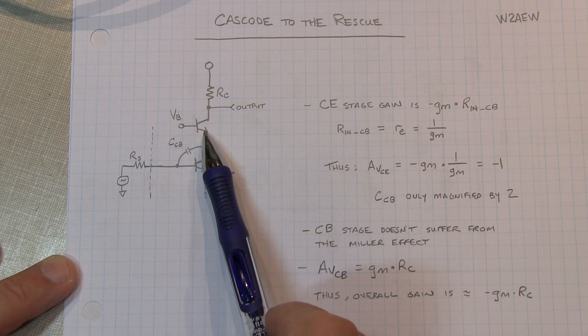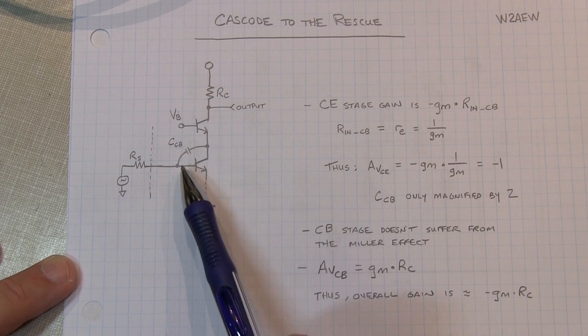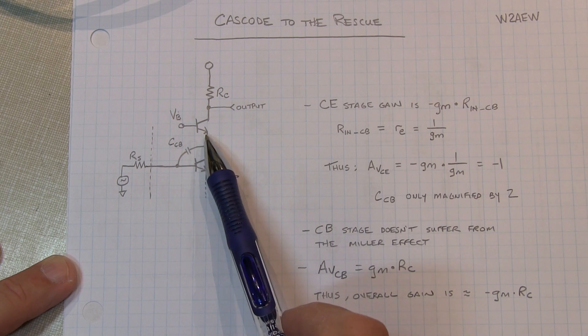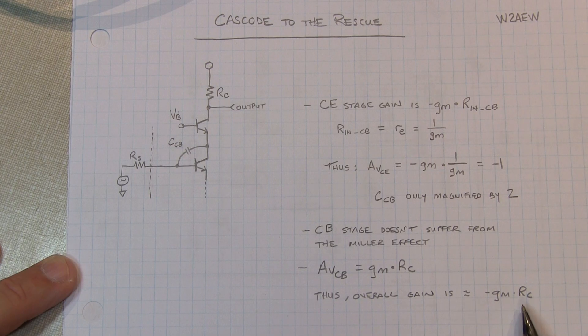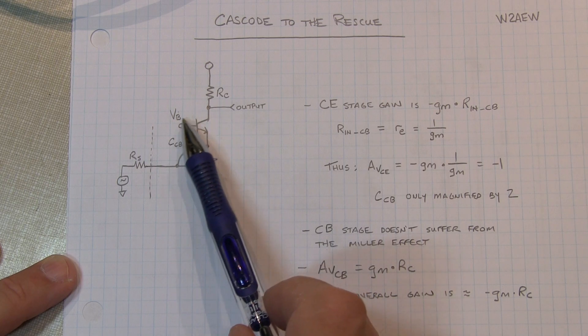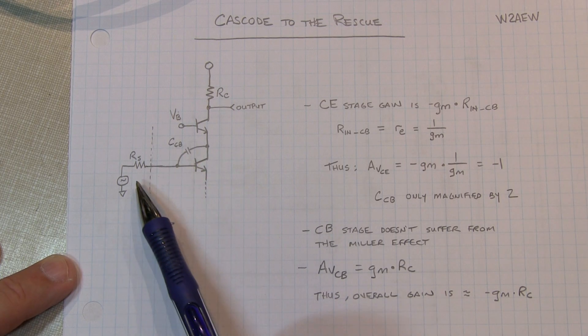And the gain of a common base amplifier is equal to gm times Rc. Therefore the overall gain is basically, since this is unity and this is gm Rc, the overall gain of this entire circuit is essentially the same as just the common emitter amplifier itself. But now we've introduced this cascode common base amplifier that has gotten rid of the Miller effect, and that has the effect of improving the bandwidth of the circuit.